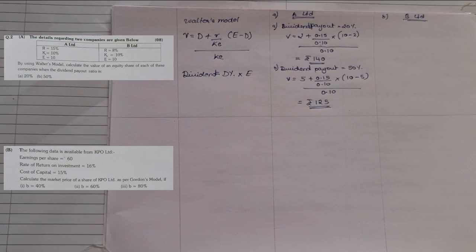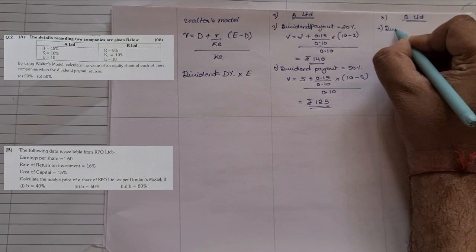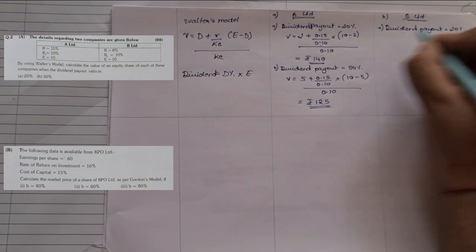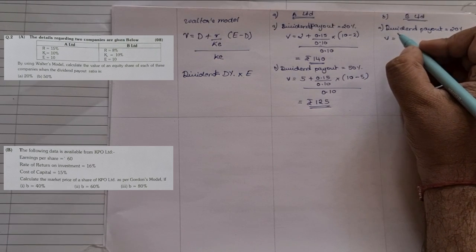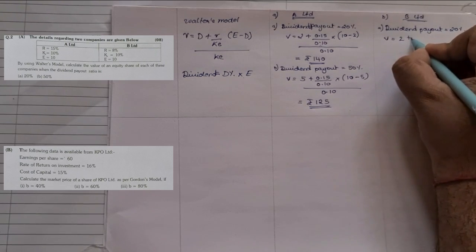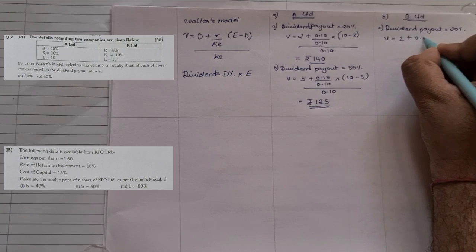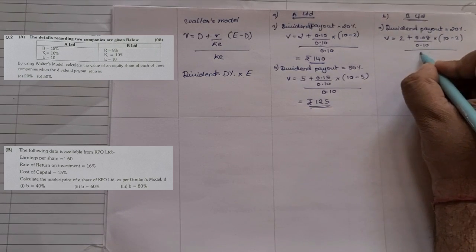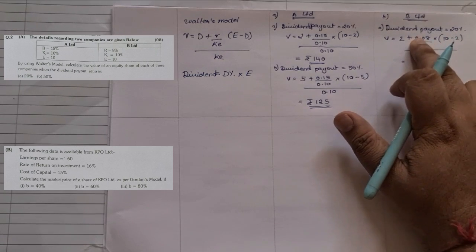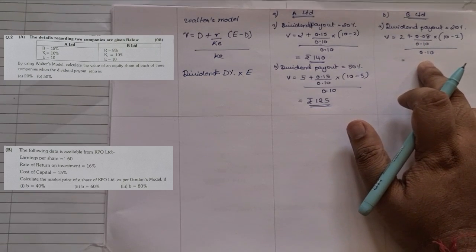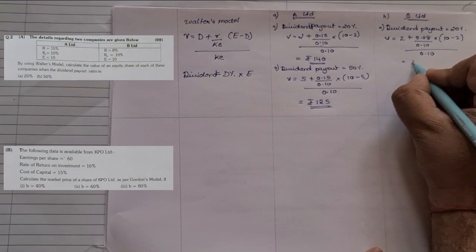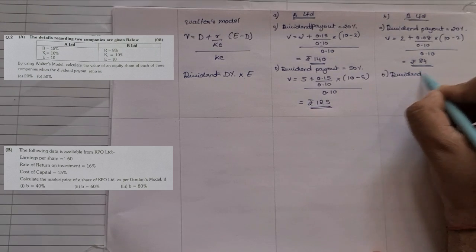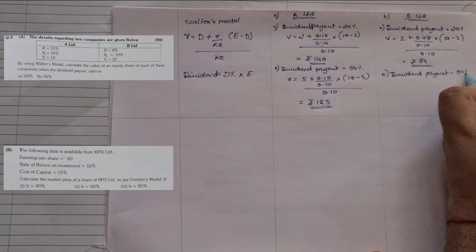Now for B Limited, when dividend payout is 20%: Earning = ₹10, so D = 10 × 20% = ₹2. Rate of return r = 8% (0.08), cost of capital k = 10% (0.10). Value of Share = [2 + (0.08/0.10) × (10 − 2)] / 0.10 = [2 + 8 × 0.08/0.10] / 0.10. Solving: 8 × 0.08/0.10 = 6.4, plus 2 = 8.4, divided by 0.10 = ₹84.